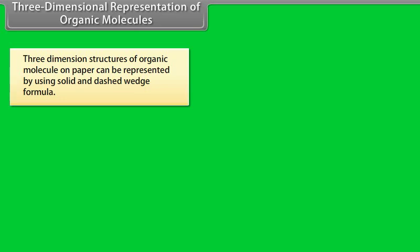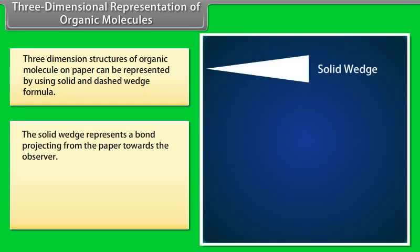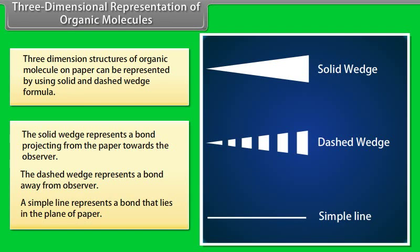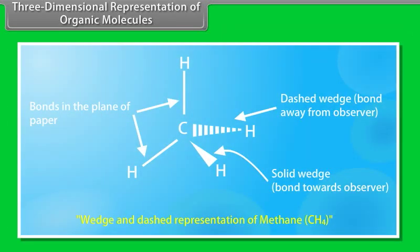Three-dimensional representation of organic molecules: Three-dimensional structures of organic molecules on paper can be represented by using solid and dashed wedge formula. The solid wedge represents a bond projecting from the paper towards the observer. The dashed wedge represents a bond away from the observer. A simple line represents a bond that lies in the plane of paper. For example, methane.